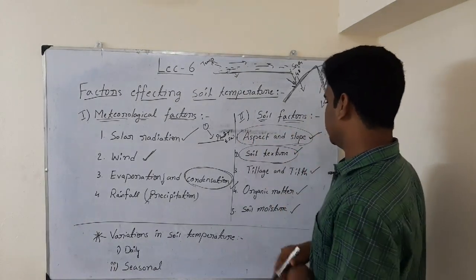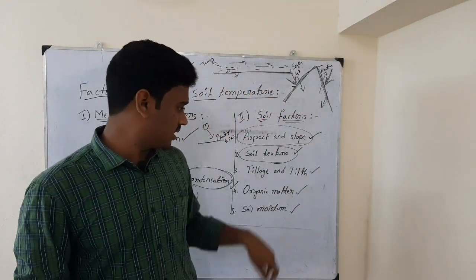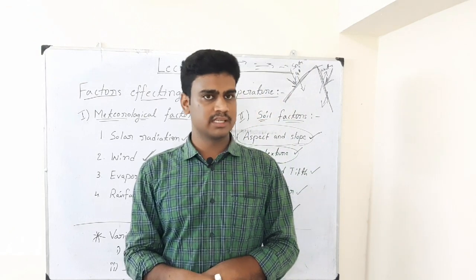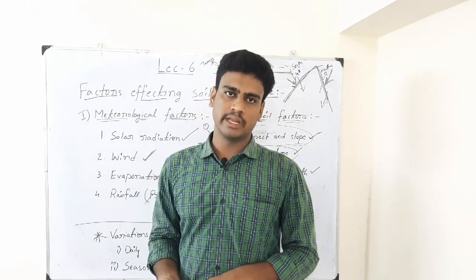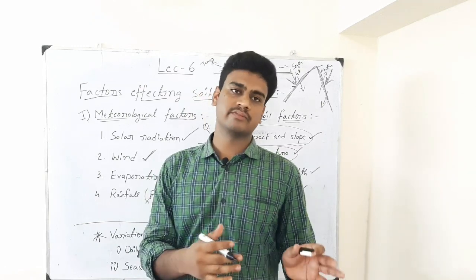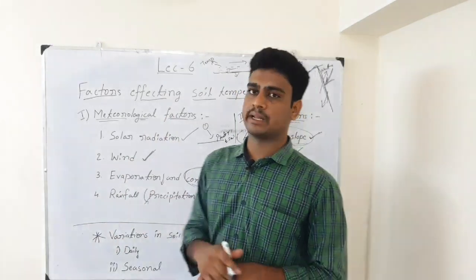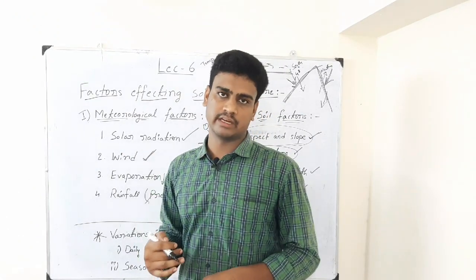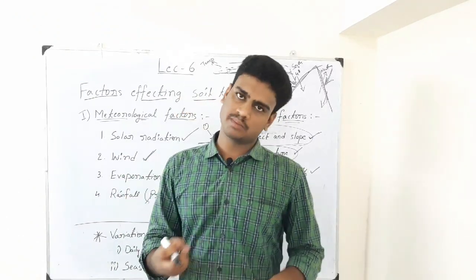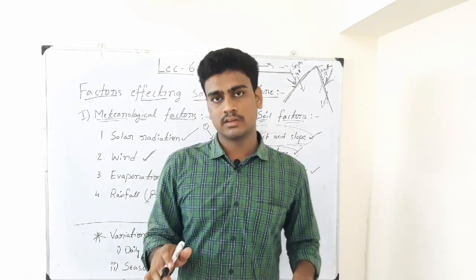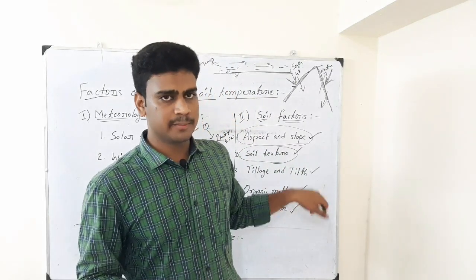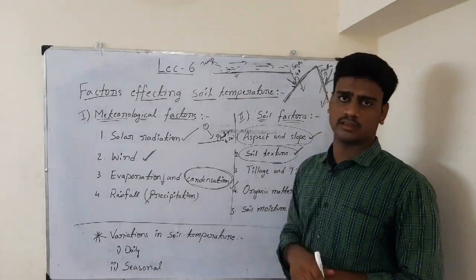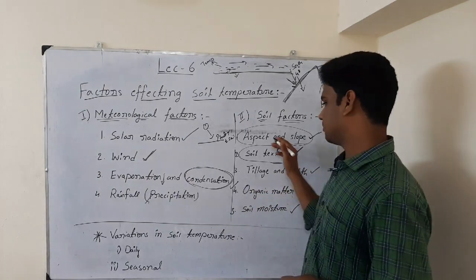The next soil factor is soil texture. Different types of soils exist - sandy, clay, and silt. Remember that black bodies absorb more heat and light bodies absorb less heat with high reflection. In light-colored soils, the soil heats up very quickly and also cools down very quickly. Black soil absorbs heat and cools down very slowly. So soil temperature varies based on the color and texture of the soil.